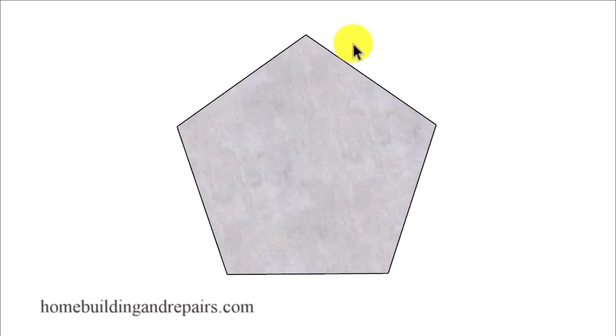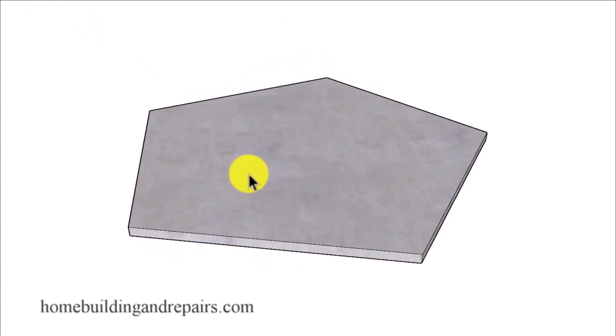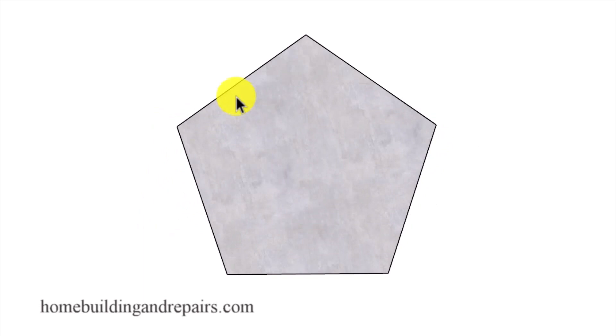In this video I will show you how you can use the common rafters instead of the hip rafters that might be difficult for you to calculate the angle for when trying to frame a roof for a pentagon shaped building or a building with five equal sides.